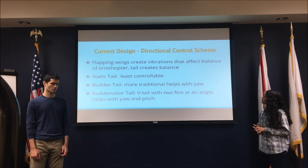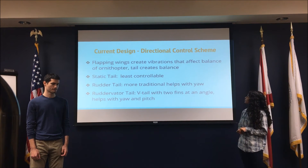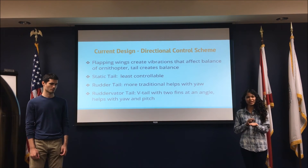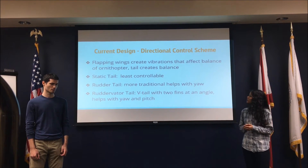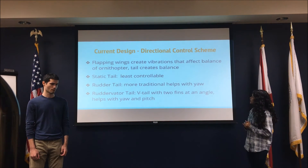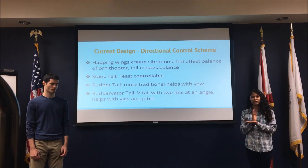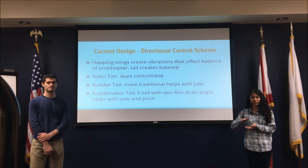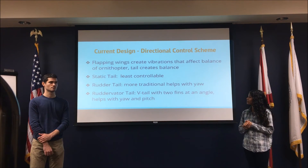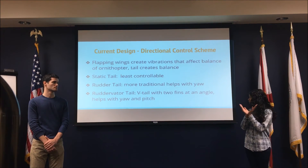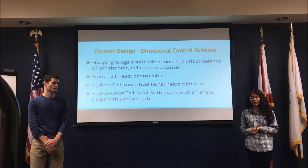The other component is the directional control scheme. Flapping wings create vibrations in the mechanism, so a tail is added at the end to maintain balance. Three traditional tail types are: the static tail, which is the least controllable; the rudder tail, which consists of a vertical stabilizer that helps create yaw, allowing the vehicle to move left and right; and the rudder-elevator tail, also known as the V-tail, where two fins are angled at the back to help with both yaw and pitch — moving the vehicle left, right, up, and down.